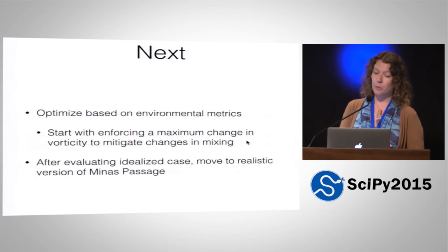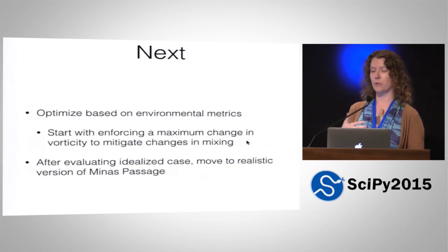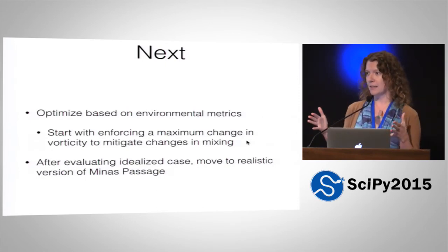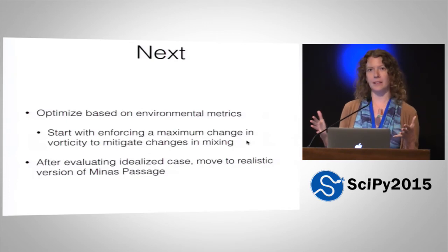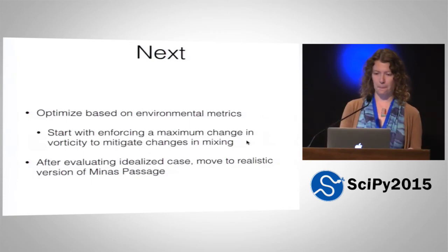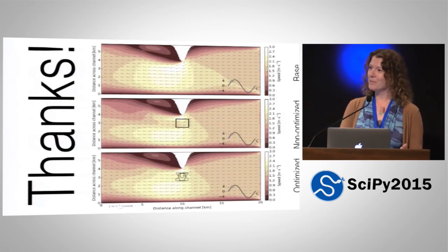One thing we've started looking at is enforcing a maximum change in vorticity — or some change in the rotation of fluid parcels around the domain — to think about changes to mixing. That's something we can start thinking about in a fairly straightforward manner given the model setup we have. And after we've explored this from an idealized perspective, we're thinking about moving to a more realistic case — thinking about Minas Passage in actuality instead of the idealized version.